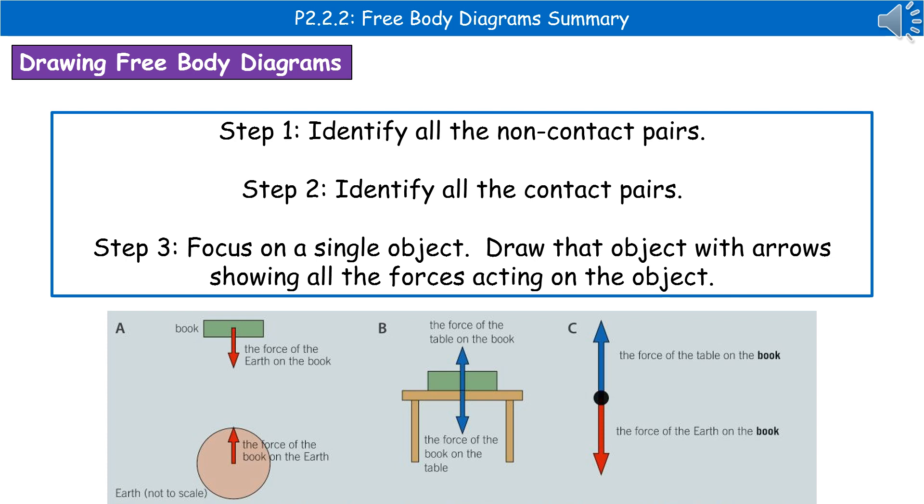Step two, we identify all the contact pairs. In this example, we've got the force of the table on the book and the force of the book on the table.